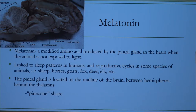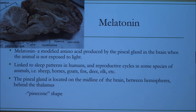Melatonin is a modified amino acid, and it's made by the pineal gland, which is shown right here in this diagram — this is actually a sheep brain. There's a round structure here — this is the thalamus — and then this pine cone-shaped structure behind it is the pineal gland, and that's where melatonin comes from. Melatonin is produced by the pineal gland when the animal is not exposed to light, and it's linked to sleep patterns in humans and also reproductive cycles in many different species of animals.